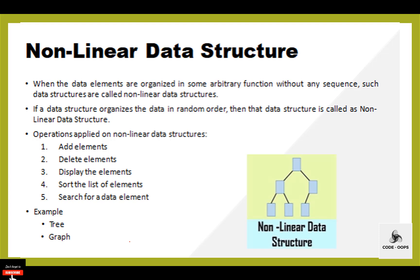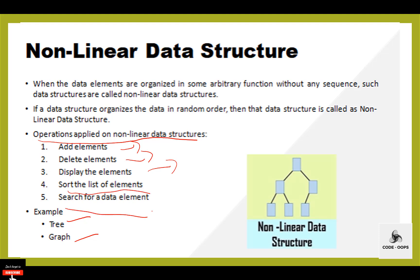The nonlinear data structure: when data elements are organized in some arbitrary fashion without any sequence, such data structures are known as nonlinear data structures. If a data structure organizes data in random order, it is known as a nonlinear data structure. Nonlinear data structures are tree and graph, with one-to-many, many-to-many, and many-to-one relationships. Operations applied include adding an element, deleting an element, displaying elements, sorting, and searching.